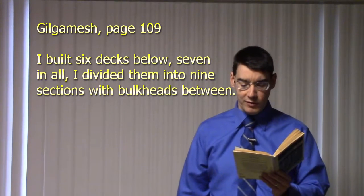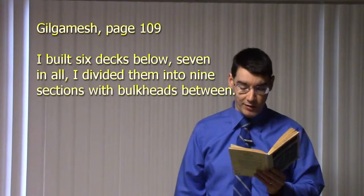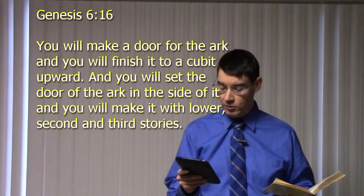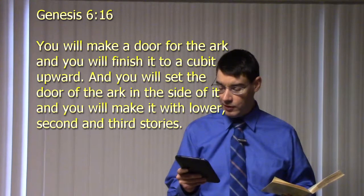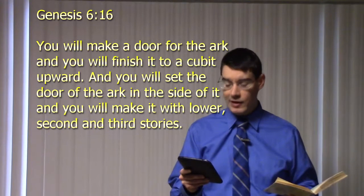But what about the number of decks or stories in these two vessels? Again, on page 109 it says, 'I built six decks below, seven in all. I divided them into nine sections with bulkheads between.' Noah was told to build three stories in his vessel. Genesis chapter 6 verse 16: 'You will make a door for the ark, and you will finish it to a cubit upward. And you will set the door of the ark in the side of it, and you will make it with lower second and third stories.'